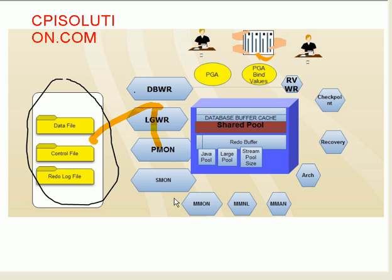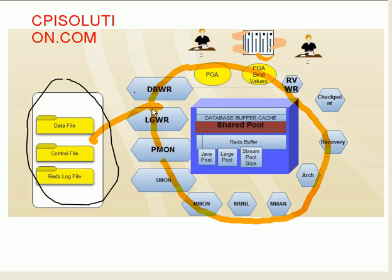These are the various processes which interact with the data files and also the memory structure. Any action which happens in memory is always faster — that is the basic principle behind an Oracle database, and that's the reason why Oracle performs much better. As a DBA, your role is to ensure that most of the activities happen in memory.